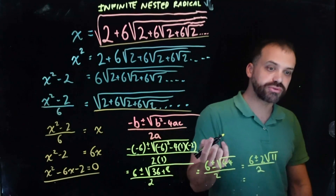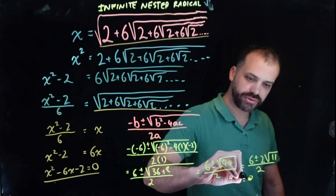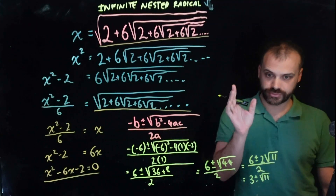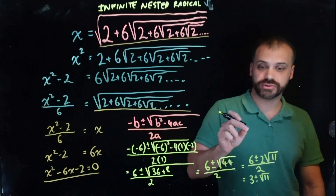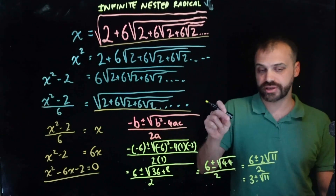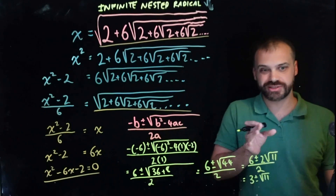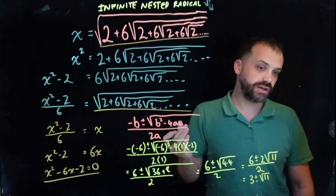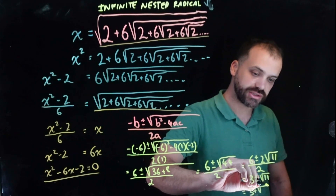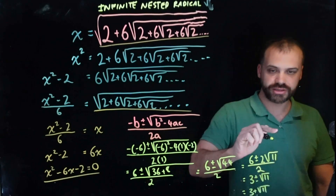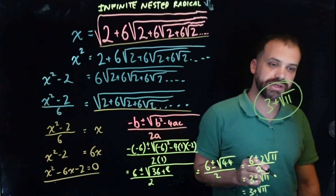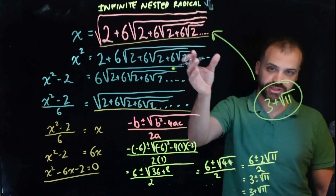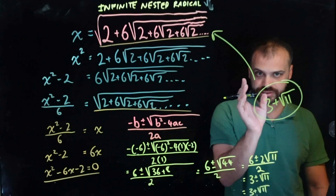We can divide both terms by 2, giving us 3 plus or minus root 11. Does that mean we have two answers — 3 plus root 11 and 3 minus root 11? No. We have to reject one of those answers because the square root of a positive number will be a positive number, so we reject the negative answer. We get 3 plus root 11. 3 plus root 11 is equal to all of this — we've taken the infinite and turned it into a very simple number.